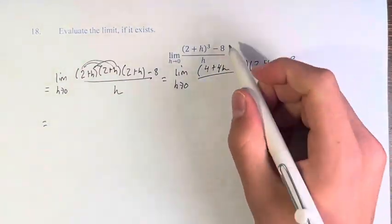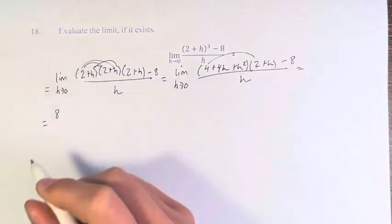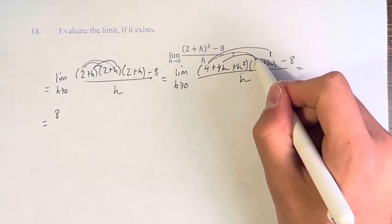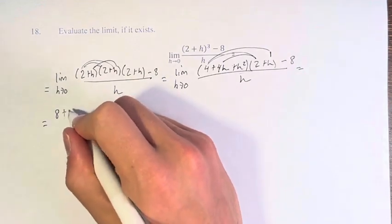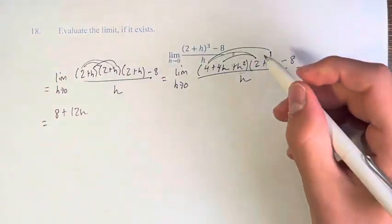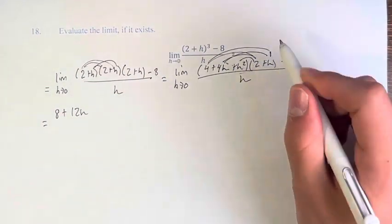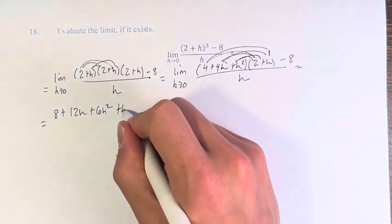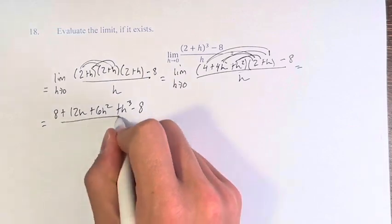Multiplying these together, we have 8 plus 4h plus 8h plus 12h plus 4h² plus 2h² is plus 6h² and plus h³ minus 8 over h.